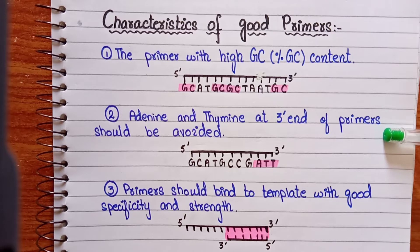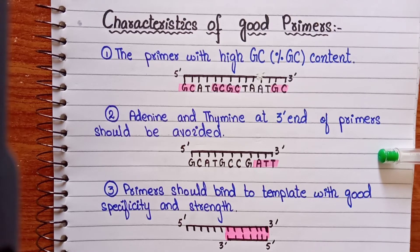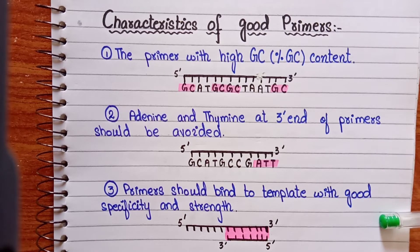The second characteristic is that adenine and thymine at the 3' end of primers should be avoided. Adenine and thymine form only two hydrogen bonds, so they will bind to the template weakly.